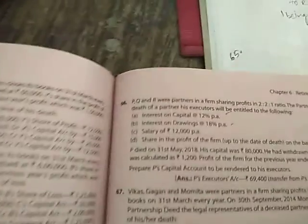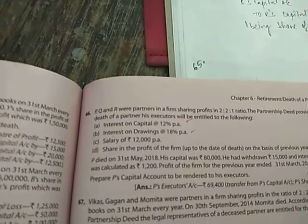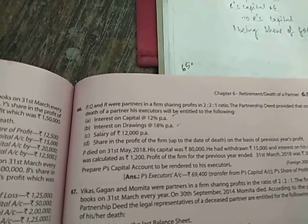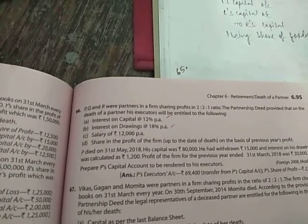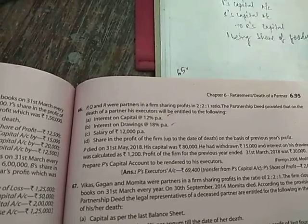So let us see one more question of similar type. That is the question number 66 in this book. PQ and R are partners in a firm sharing profits in the ratio of 2 to 2 to 1.